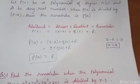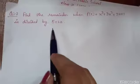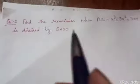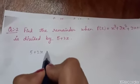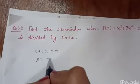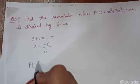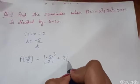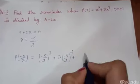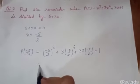Let's solve some more questions. The second question is: find the remainder when P of X is divided by 5 plus 2X. Firstly, the first step is to equate the divisor equal to 0. So we get X equal to minus 5 by 2 as the zero of the divisor. Now replace X by minus 5 by 2 in the given polynomial. We get minus 5 by 2 to the power 3 plus 3 into minus 5 by 2 to the power 2 plus 3 into minus 5 by 2 plus 1.